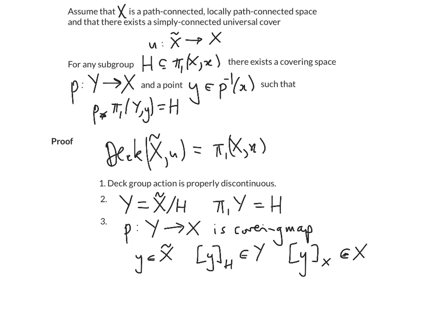And the map p is just the thing that sends the equivalence class of y under the h action to the equivalence class of y under the pi 1x action. All right, so all this is doing is, this is saying we remember the h orbit of the point y in the universal cover, and this is saying we remember the entire pi 1x orbit of the point y in the universal cover. So it's like a forgetful map.